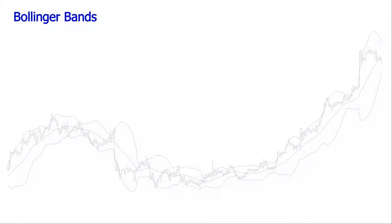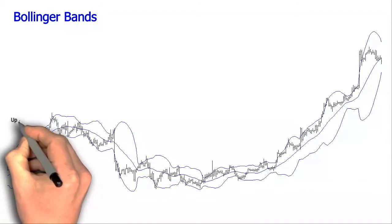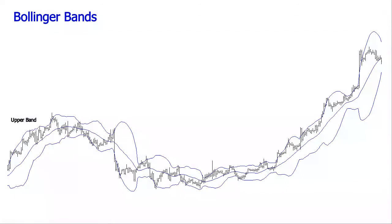The Bollinger Bands indicator is plotting two lines, the upper band and the lower band. They are placed at a certain distance away from a center line that is a simple moving average.